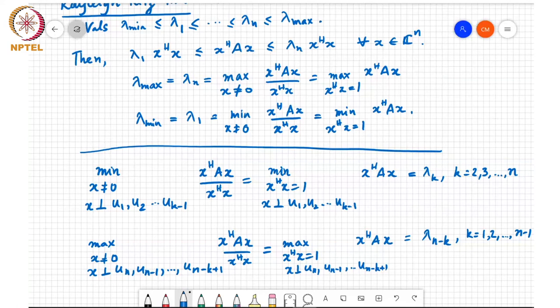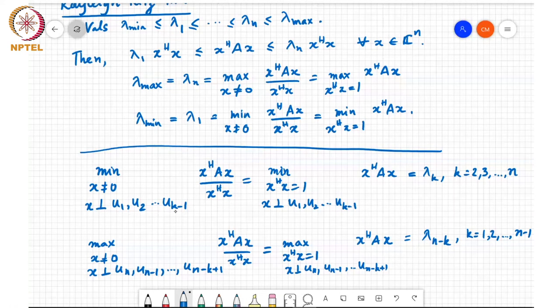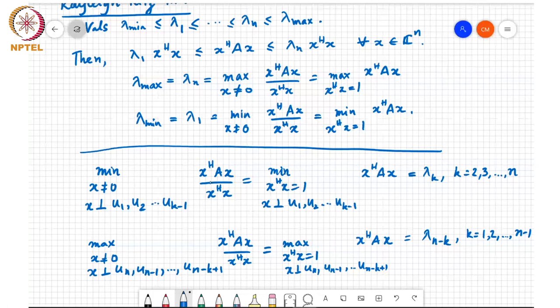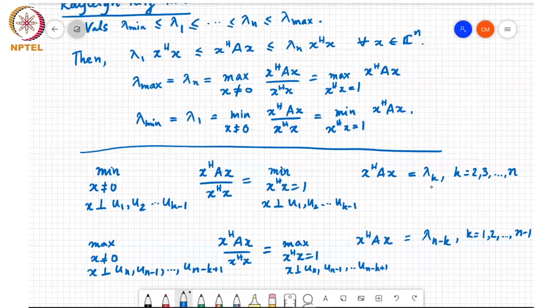And extending this argument, we have that the minimum over all non-zero x subject to the constraint that x should be perpendicular to the first k minus 1 eigenvectors, that is the k minus 1 eigenvectors corresponding to the smallest k minus 1 eigenvalues of the matrix A, of this objective function x-Hermitian Ax over x-Hermitian x, that is equal to lambda k for k equal to 2, 3 up to n.